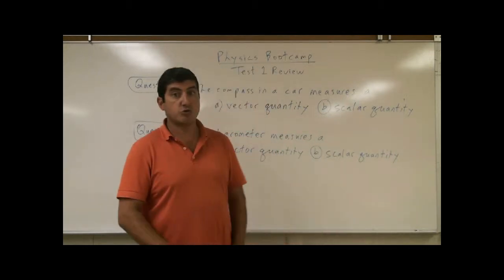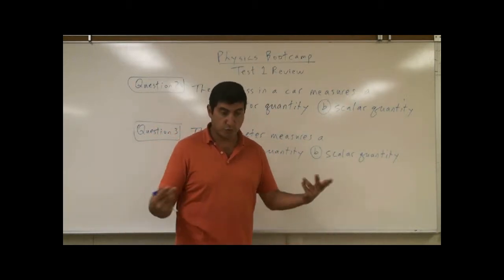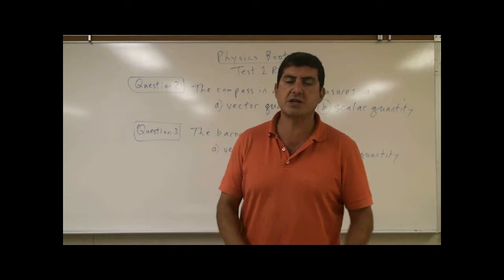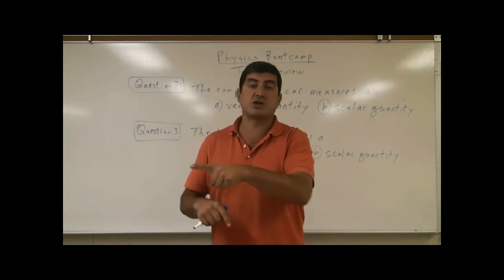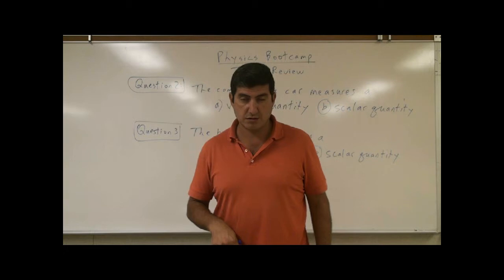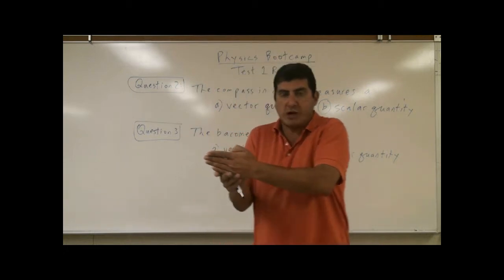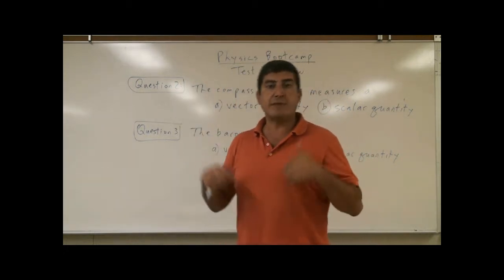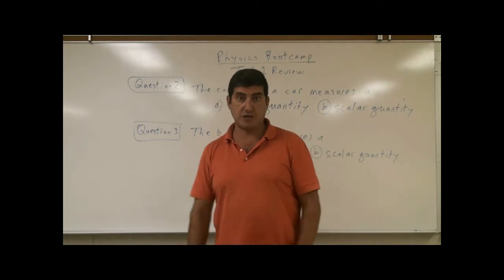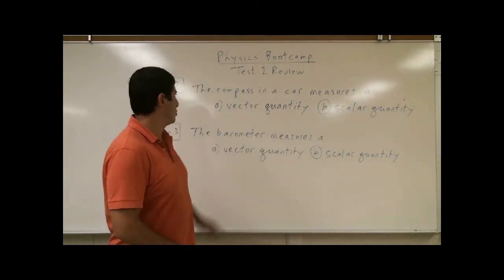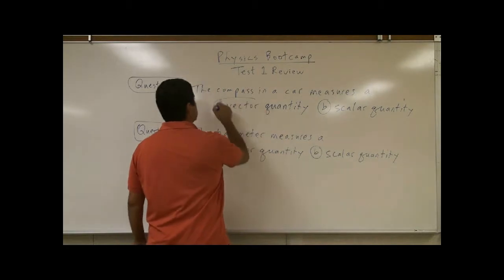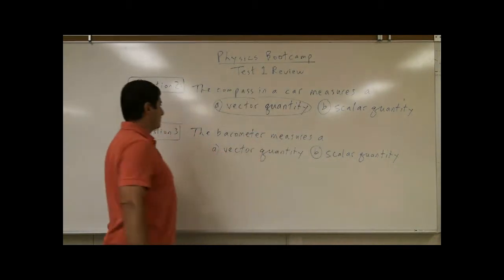The other way you can argue that the compass is measuring a vector quantity is because the compass is showing the direction of the magnetic field lines of the earth. The compass points in the direction of the magnetic field lines and magnetic field is a vector quantity, so it shows direction. So the answer is vector quantity.